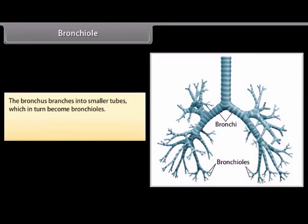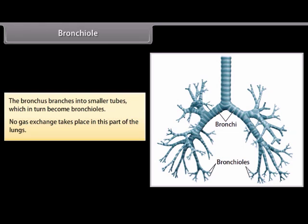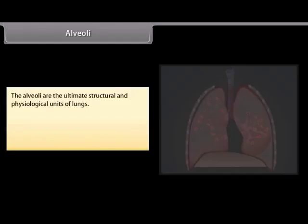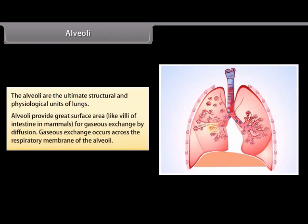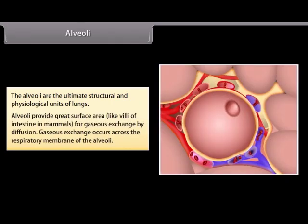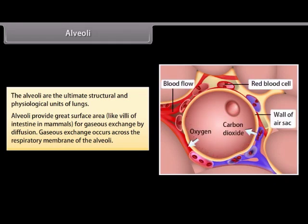The bronchus branches into smaller tubes which in turn become bronchioles. No gas exchange takes place in this part of the lungs. The alveoli are the ultimate structural and physiological units of the lungs. Alveoli provide a great surface area, like villi of the intestine in mammals, for gas exchange by diffusion. Gas exchange occurs across the respiratory membranes of the alveoli.